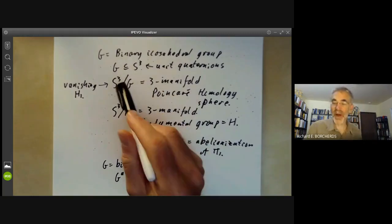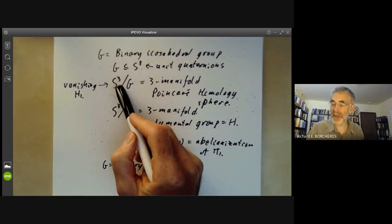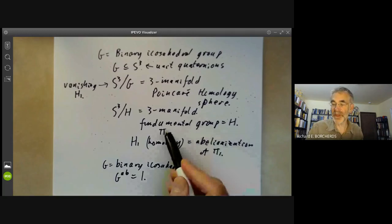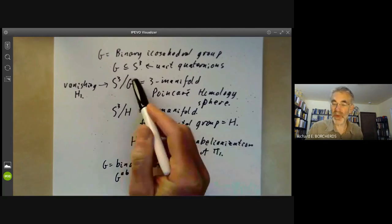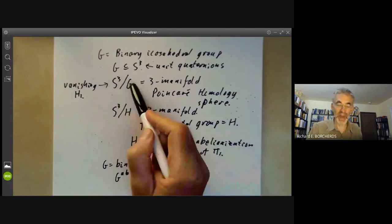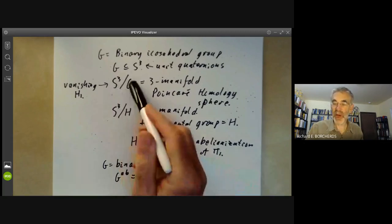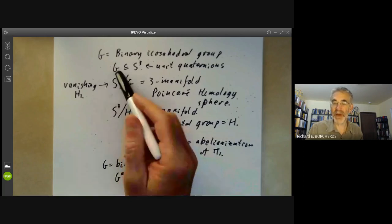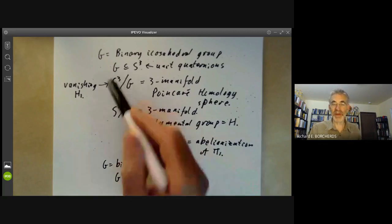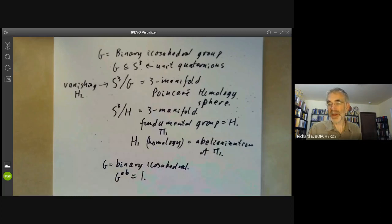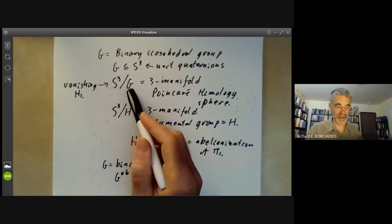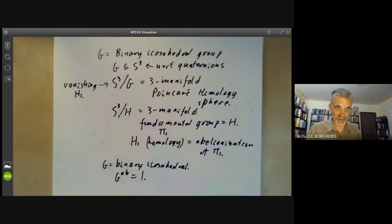Well, so this group has the same homology as a three sphere, but it has different homotopy groups. So its first homotopy group is order 120. And he then made the notorious Poincaré conjecture that any compact three manifold with the same homotopy groups as a three sphere must actually be a three sphere. And this was proved a few years ago by Perelman continuing work of Hamilton as a very difficult result.